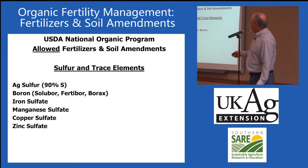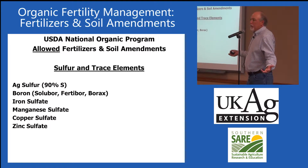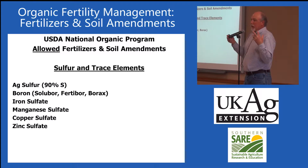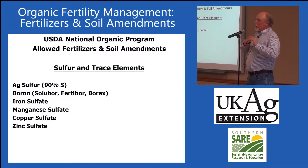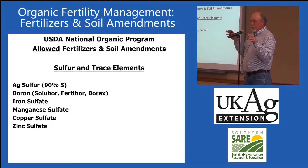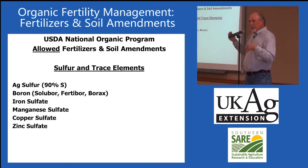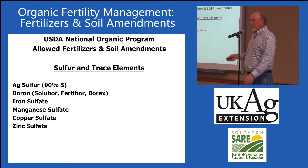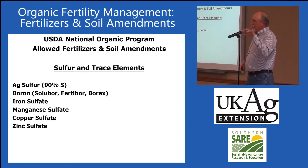On sulfur and trace elements, ag sulfur is 90% elemental sulfur. Based on a soil test, there is plenty of extension information showing you can nail the pH just by amending the soil with sulfur, letting it activate for a few months or a year, then planting. You can also apply a little bit every year to keep the pH down.